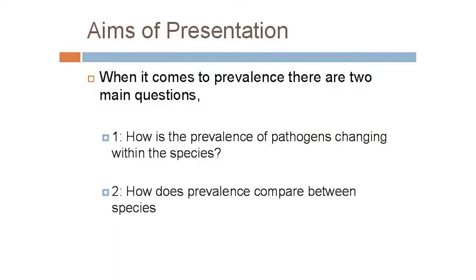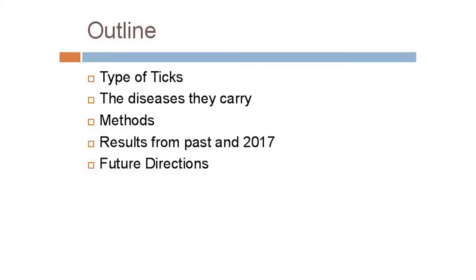When talking about the prevalence of the pathogen within the vector or parasite, I'm going to be focusing on two main questions: how does it vary between species of the parasite, and how does it vary over different time periods? We're going to quickly talk about the different types of ticks, mention the diseases they carry, explain the methods we use to test for diseases, tell you about our current results as well as some past ones from 2016, and hopefully look at future directions as well.